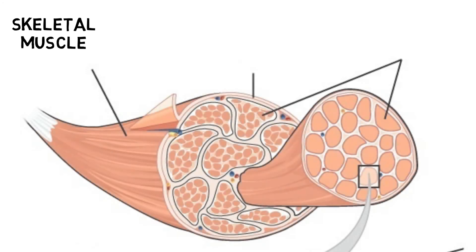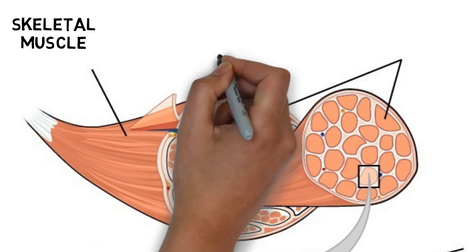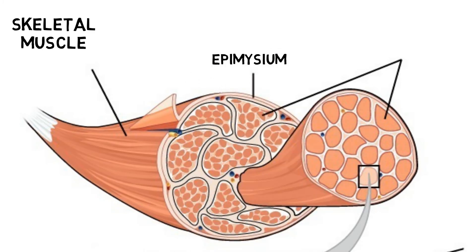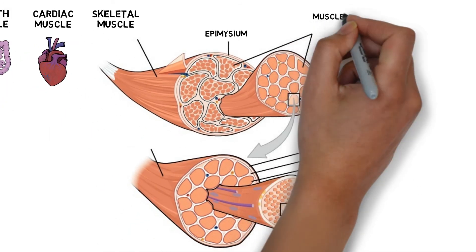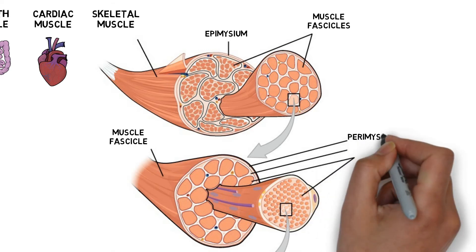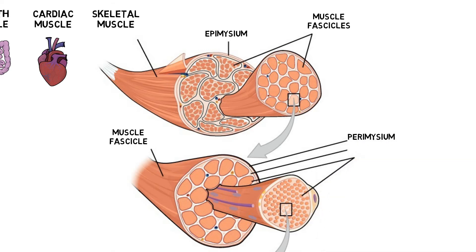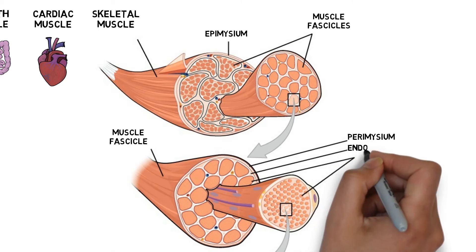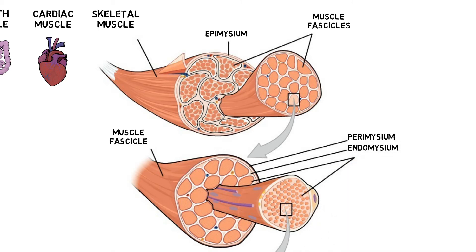The structure of skeletal muscle can appear complex at first, but it is worth learning. The epimysium is the connective tissue that surrounds the muscle belly. Fascicles are bundles of muscle cells segregated from the rest of the muscle by a connective tissue sheath. The perimysium is the connective tissue that surrounds the fascicles. The endomysium is the connective tissue that surrounds the muscle fibers.